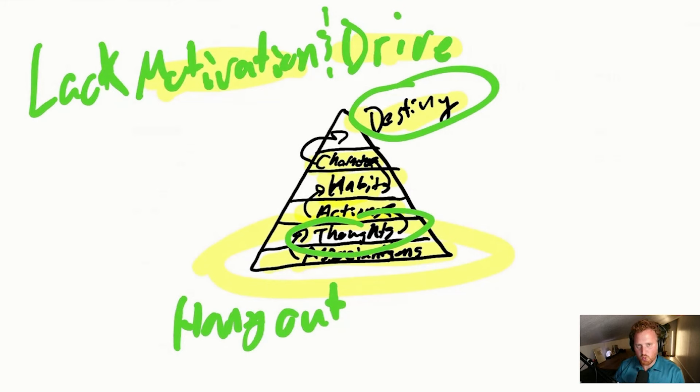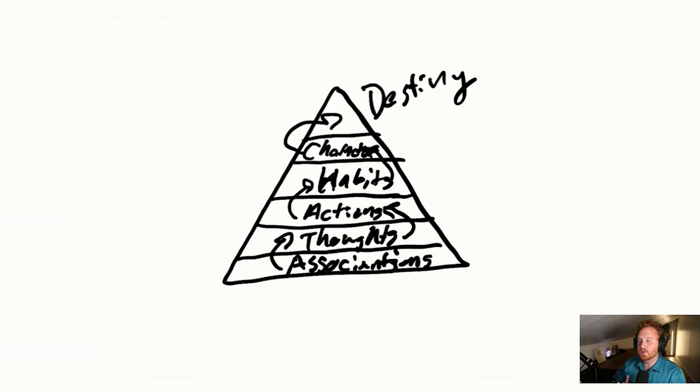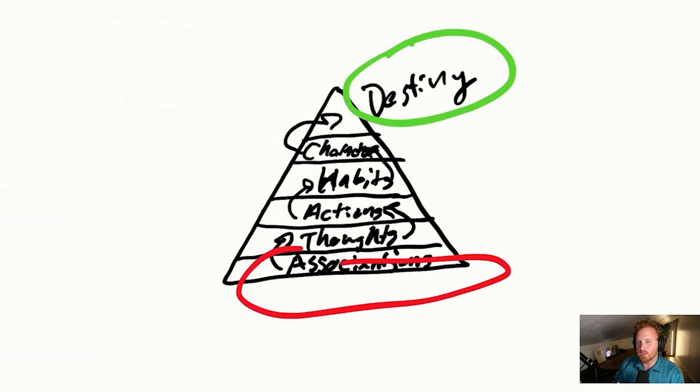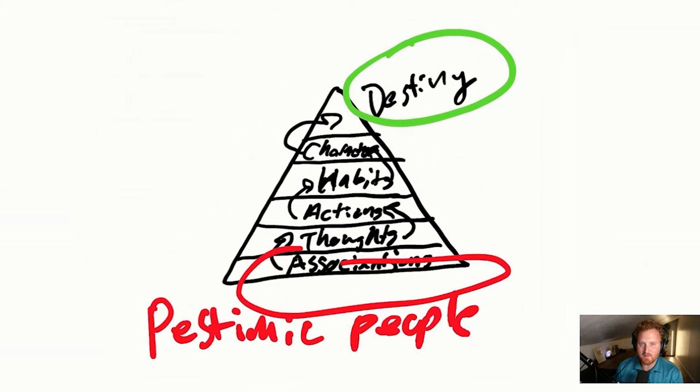Now, one other thing that I think is really important to understand about this is what about the opposite effect? So what happens if you do something that you don't want, like the destiny that you don't want to have? Well, typically, again, that still starts with associations. So are there pessimistic people that you're hanging out with? Are you watching videos that are not very uplifting? Are you reading things that are not very uplifting? Are you listening to music or listening to talk shows or whatever that are not uplifting? And one thing would be the news.